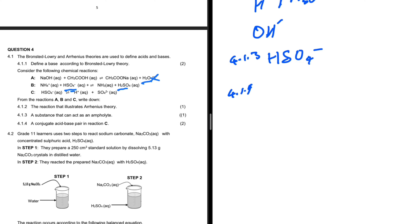Question 4.1.4 asks for a conjugate acid-base pair in reaction C. In reaction C, HSO₄⁻ donates its proton giving SO₄²⁻. What donates a proton is an acid, so HSO₄⁻ is the acid and its conjugate base is SO₄²⁻. Our conjugate acid-base pair is HSO₄⁻ and SO₄²⁻.